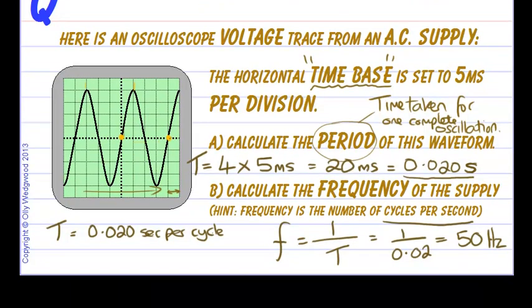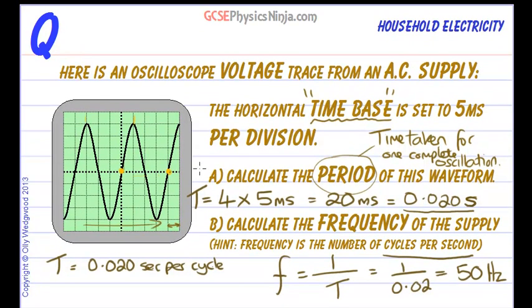So two calculations from an oscilloscope display of an AC waveform. The time base will tell us something about the period, the time of one oscillation. And you can measure that in milliseconds. It's quite useful to convert it to standard unit seconds.